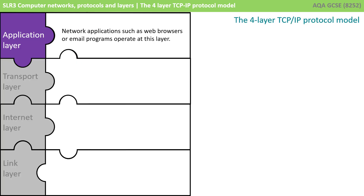So let's look at the four specific layers of the TCP/IP protocol model. The top layer is the application layer. This is the first layer that a piece of network traffic would go through when going down through the protocol stack and out onto a network. Network applications such as web pages or email programs operate at this top layer.